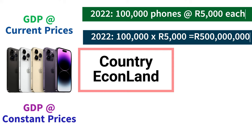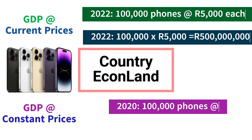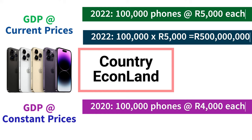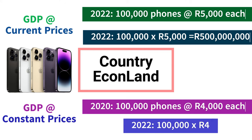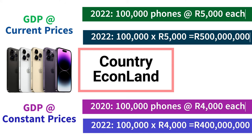Example: let's continue with Econland. To calculate GDP at constant prices, we use a base year such as 2020 to set fixed prices for goods and services. In this scenario, the base year is 2020 and each smartphone was sold for 4,000 rands in 2020. Now in 2022, we use the 2020 prices to calculate the real GDP: GDP at constant prices (2022) equals number of smartphones produced (100,000) times price per smartphone in the base year (4,000 rands) equals 400 million rands.